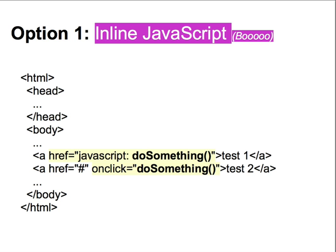First, JavaScript can be included inline with your HTML, either using the JavaScript pseudo-protocol, as in the first example, or onEvent attributes, such as onClick. In these examples, the DoSomething function will be executed when the user clicks either of these two links.